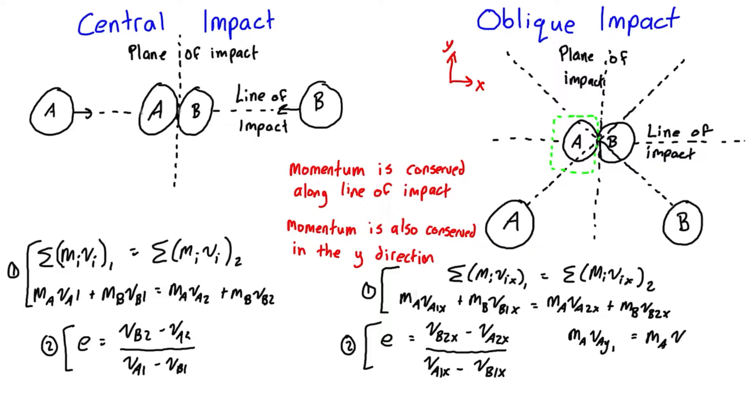The y component of the velocity before impact is going to be equal to the momentum after, so it's going to be m_A v_Ay2. And because the mass isn't changing, you can clearly see here that v_Ay1 is going to have to be equal to v_Ay2.